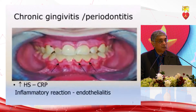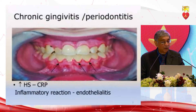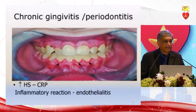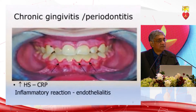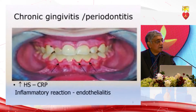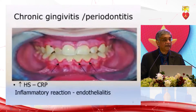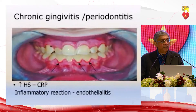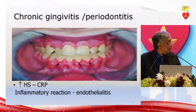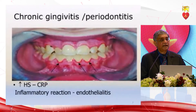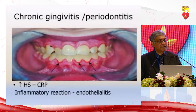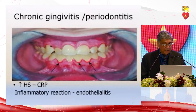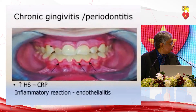In the mouth, don't forget to look at the gums, because chronic gingivitis and periodontitis are chronic inflammatory states. We now know that atherosclerosis is an inflammatory disease — endothelialitis — and therefore the increased high-sensitivity CRP seen with inflammatory conditions such as rheumatoid arthritis and psoriasis is a risk factor for ischemic heart disease.